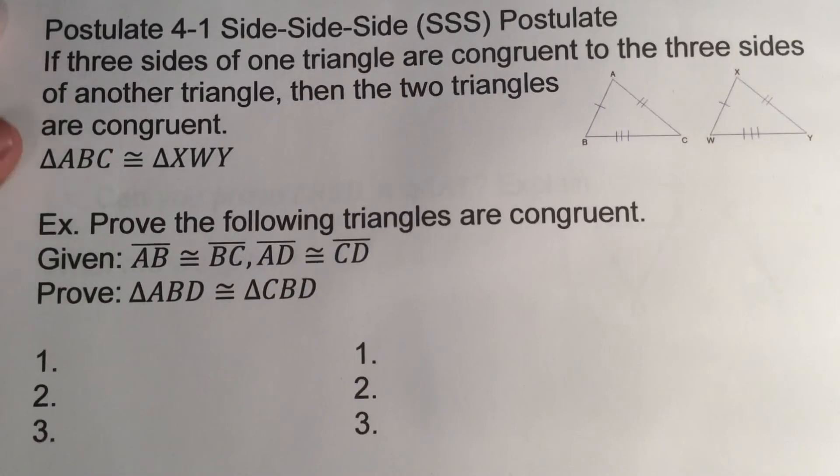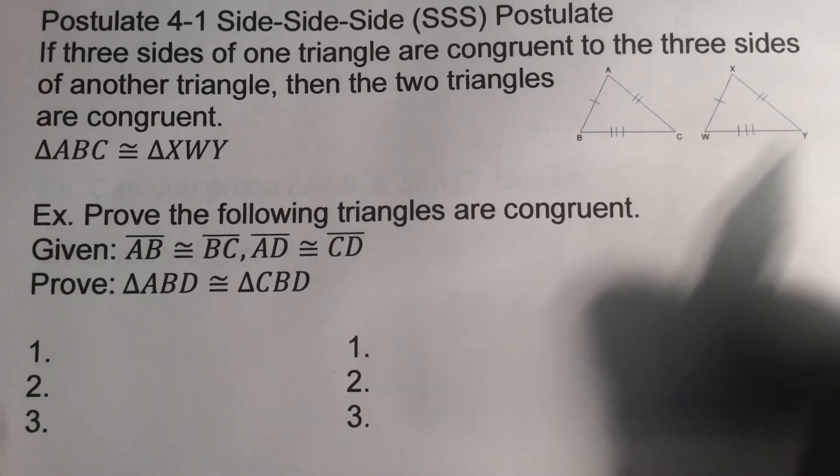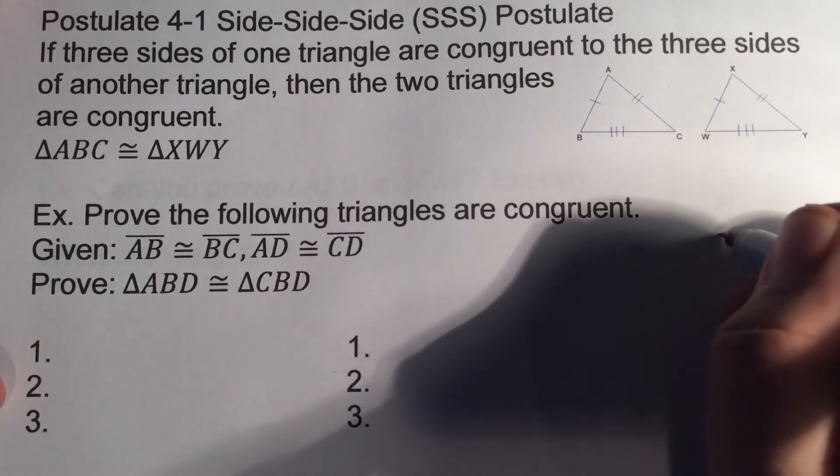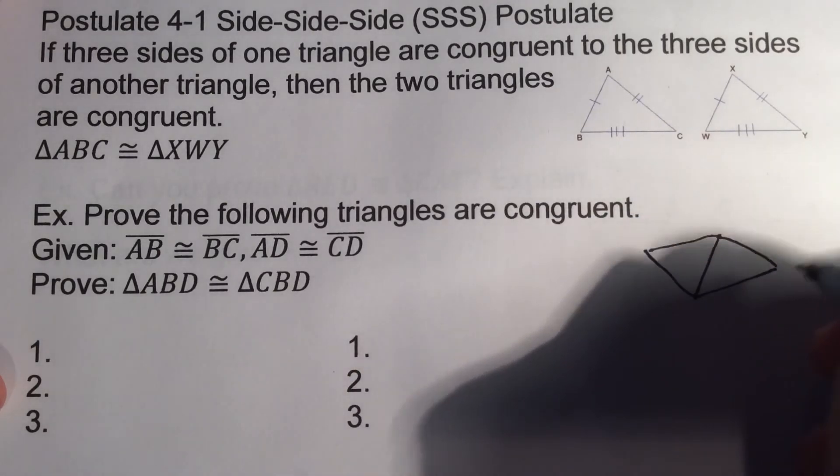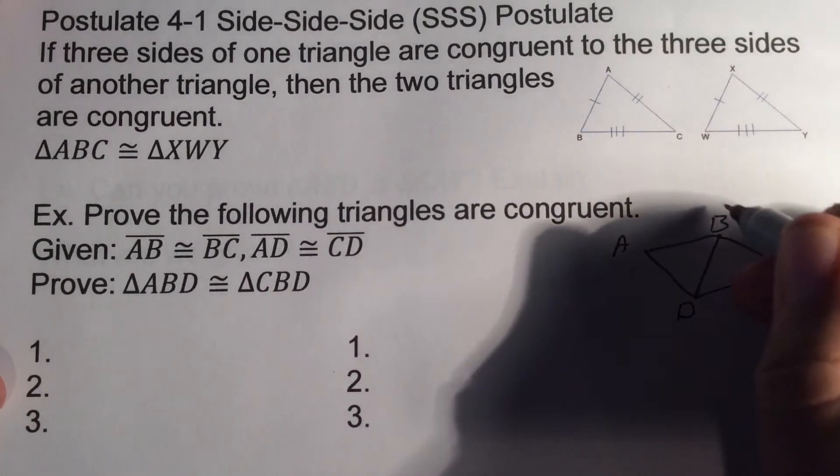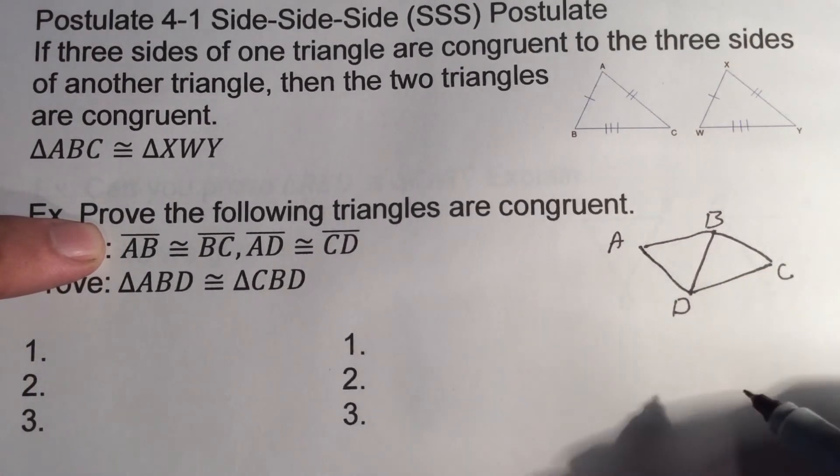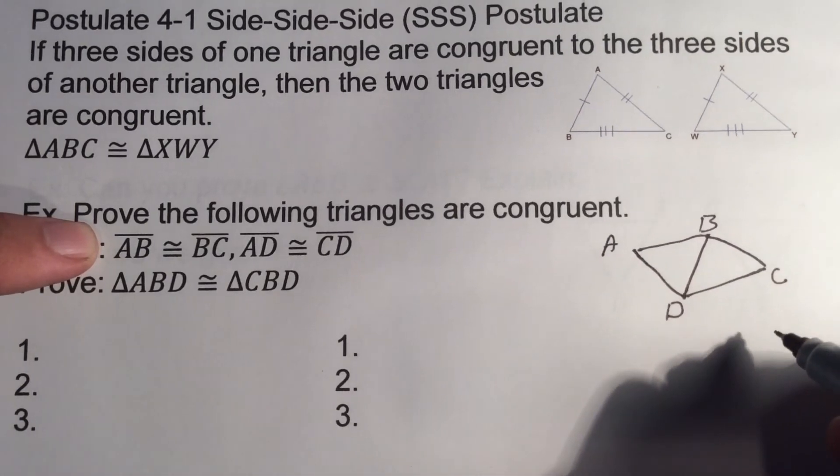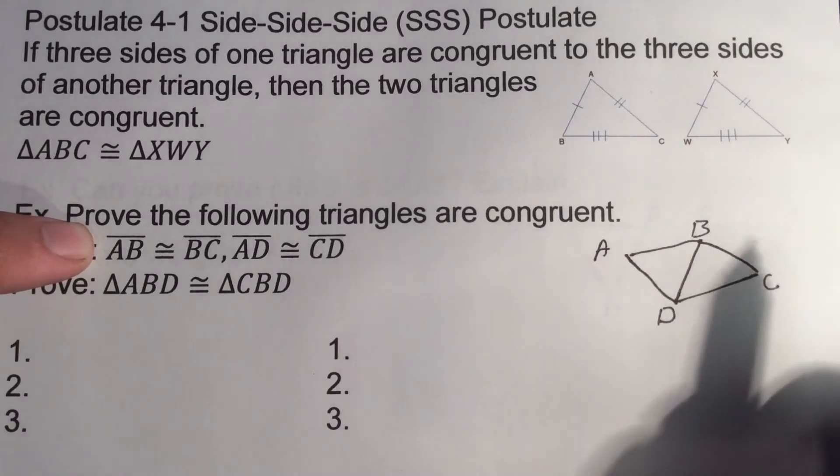Prove the following triangles are congruent, given that AB is congruent to BC, AD is congruent to CD, and we're going to prove triangle ABD is congruent to triangle CBD. So we have triangle ABD and CBD. This is the triangle we're working with. I'm sorry there's not a figure here, but we're going to draw this in. This is what it should look like.